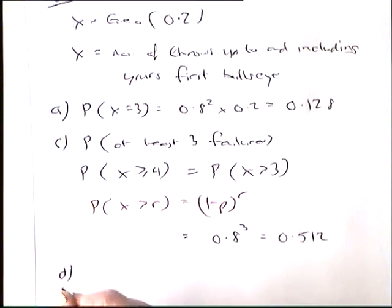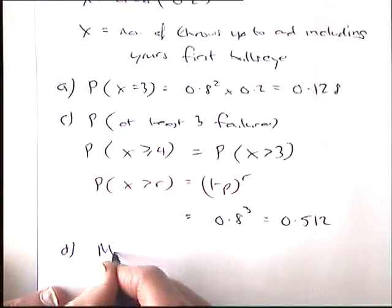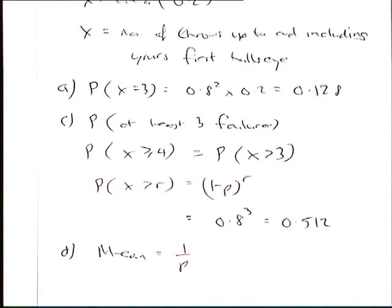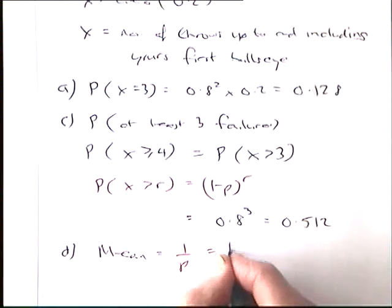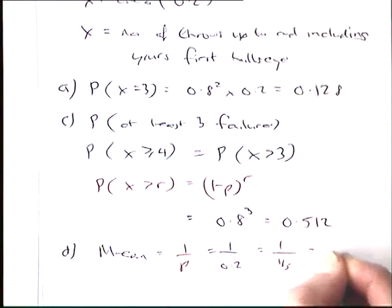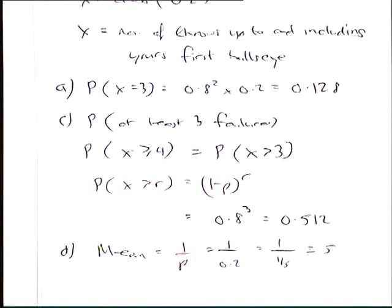And part D of this question, show the mean value of X is 5. The mean of the geometric? 1 over P. So here we've got 1 over 0.2, which is 1 over 1 fifth. So yes, it is equal to 5.